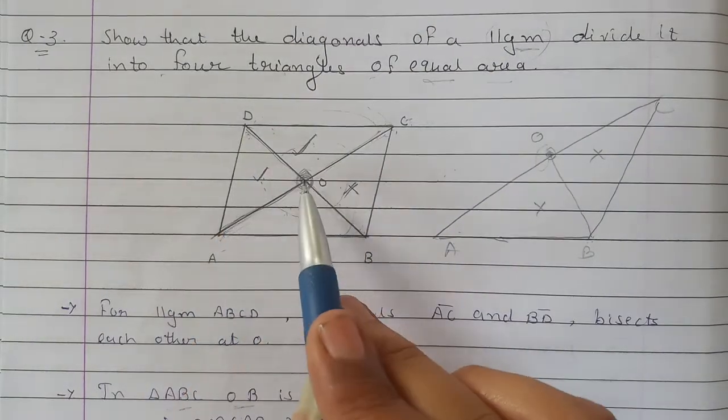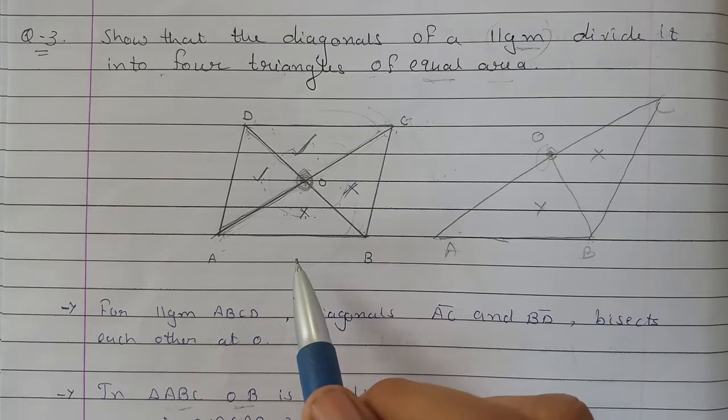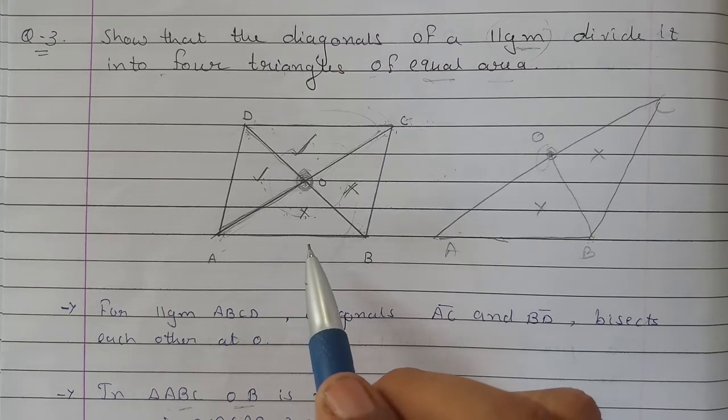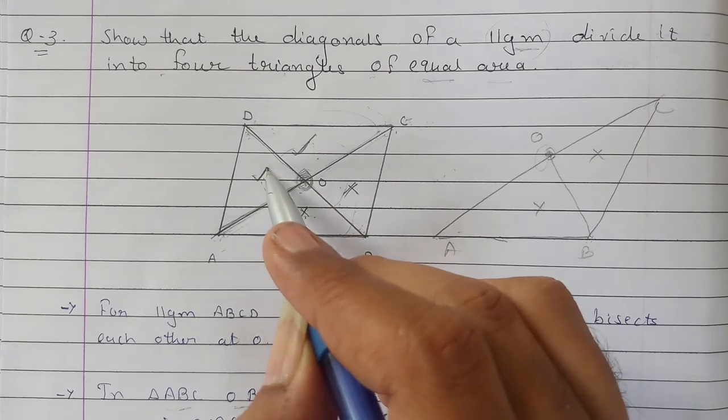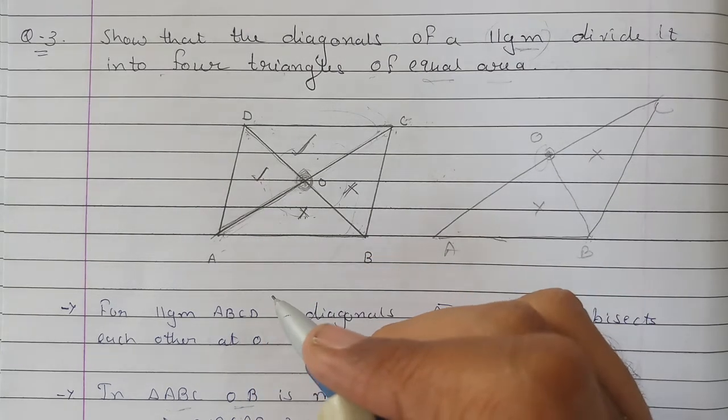ABD where O is the midpoint of BD. That means AO is the median. Therefore, this triangle and that triangle have equal area as well.